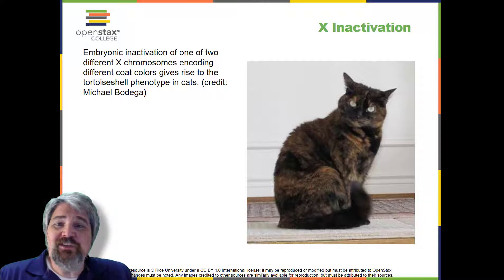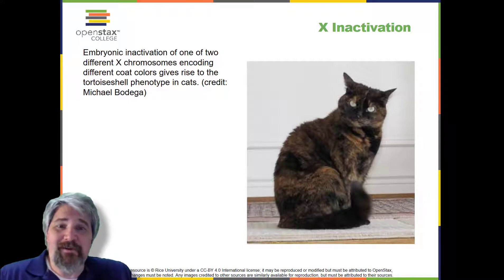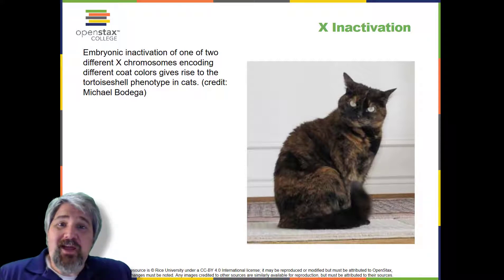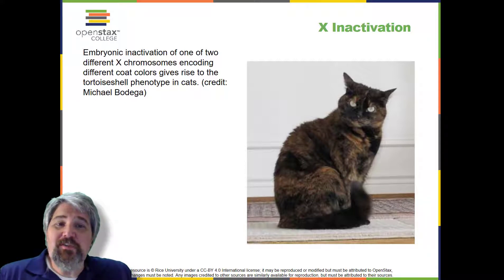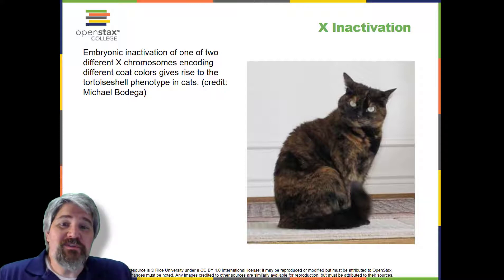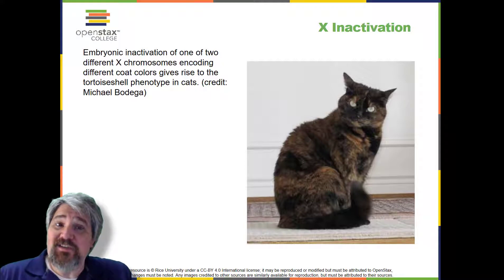Female cats heterozygous for an X-linked coat color gene will express one of two different coat colors over different regions of their body, corresponding to whichever X chromosome is inactivated in the embryonic cell progenitor of that region. When you see a tortoiseshell cat, you will know that it has to be female. In an individual carrying an abnormal number of X chromosomes, cellular mechanisms will inactivate all but one X in each of her cells.